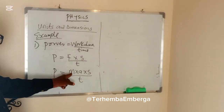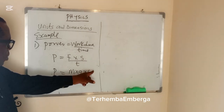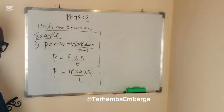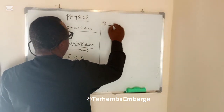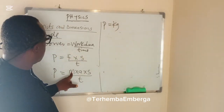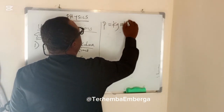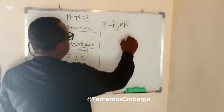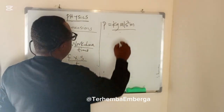We know the unit of mass, we know the unit of acceleration, we know the unit of distance, we know the unit of time. So we can write this as: power is given as kg for mass, acceleration is meter per second squared, distance is meter, over time in seconds.